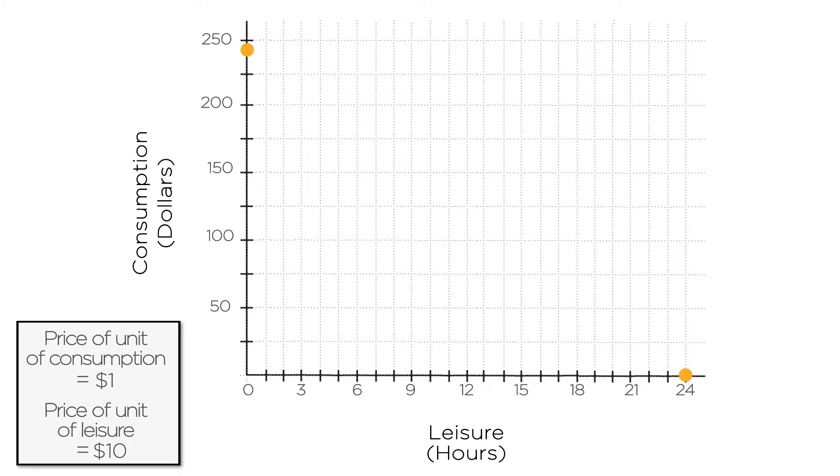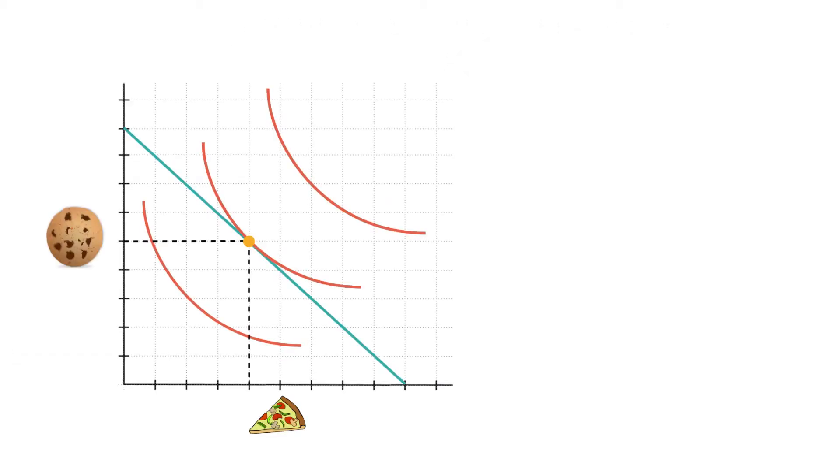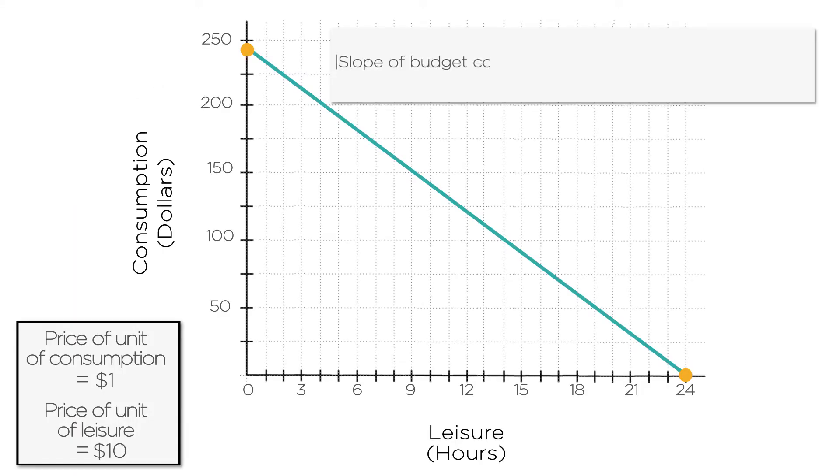These are the extremes, but you could also spend some of your day on leisure and some of it on working. We can connect the dots of these two extremes to capture all these intermediate choices. Think back to the pizza and cookies example. The absolute value of the slope of the budget constraint was equal to the price ratio, the price of pizza over the price of cookies. It's the same here. The absolute value of the slope of the budget constraint is equal to the price ratio of leisure to consumption. The price of an hour of leisure is the opportunity cost of that leisure or just the wage, which here is $10. And we've defined the price of unit of consumption to be $1. So the price ratio is 10 over 1 or 10, same as the absolute value of the slope of the budget constraint. You have to give up $10 for consumption to get one more hour of leisure.